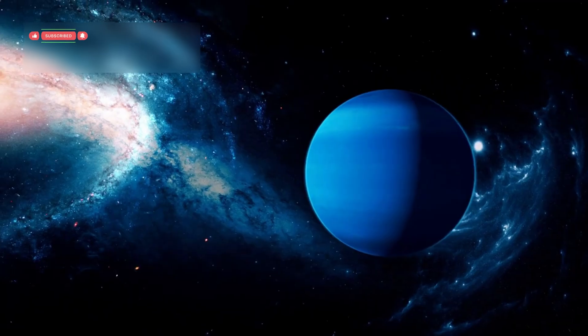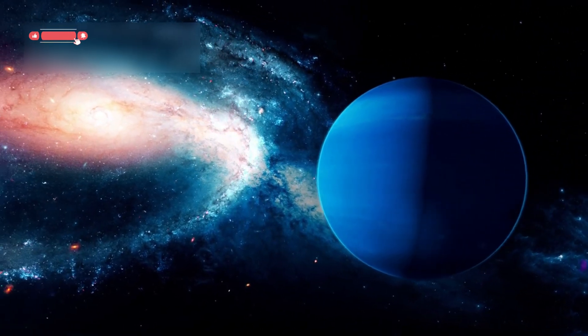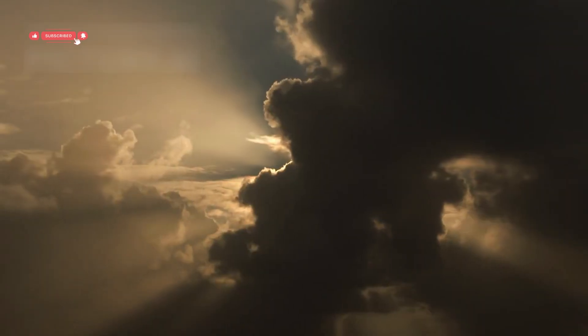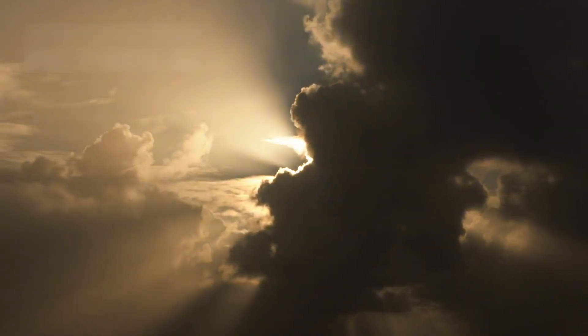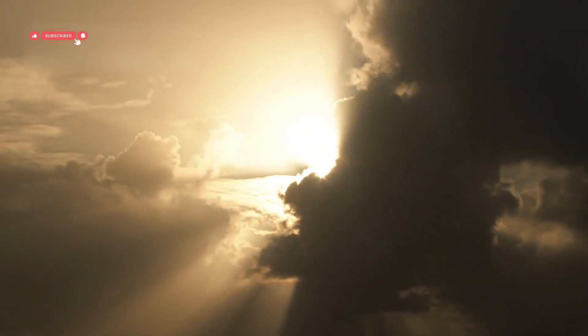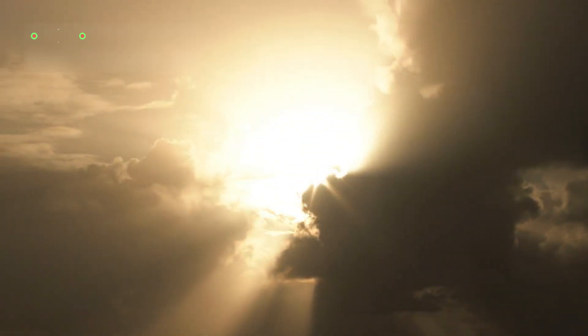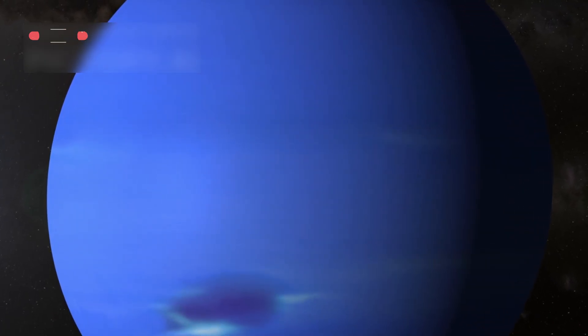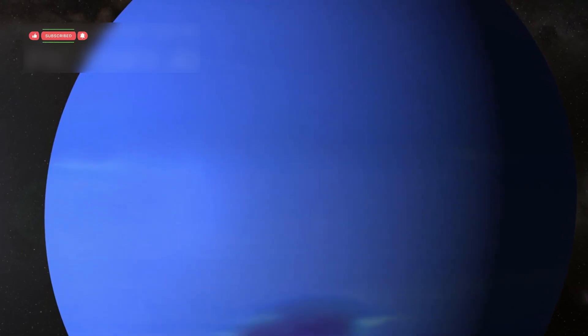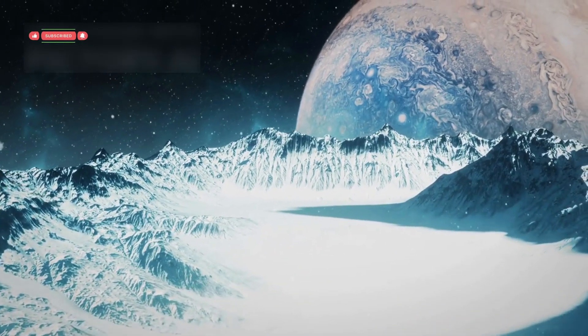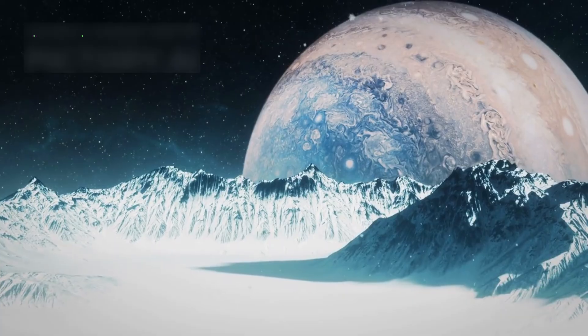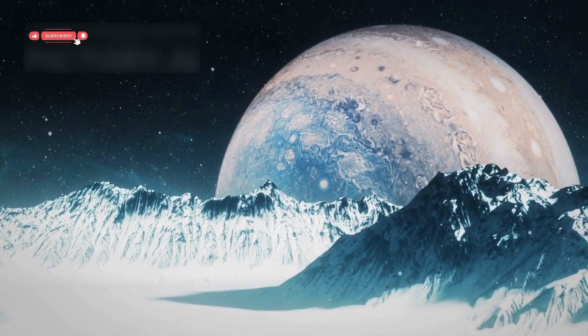In 1989, Voyager 2 reached Neptune and took the first close-up photos of this distant blue planet. The images showed Neptune's deep blue color and revealed the Great Dark Spot, a massive storm as large as Earth's diameter. Voyager 2 also discovered that Neptune has a system of rings and measured winds blowing over 2,000 km per hour, the strongest in the solar system. The probe also observed plumes shooting from the icy surface of Neptune's largest moon, Triton, where cold nitrogen geysers sprayed into space.